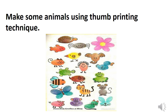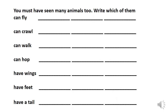Now I have some creative exercises for you all. Observe the picture — many animals are drawn here using a thumb printing technique. You have done this before in class second and first. Make some animals using thumb printing technique and paste that sheet in your notebook. Also, write which animals can fly, which can crawl, walk or hop, and which have wings, feet and a tail.